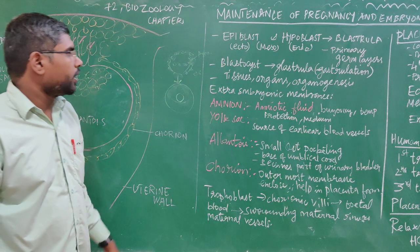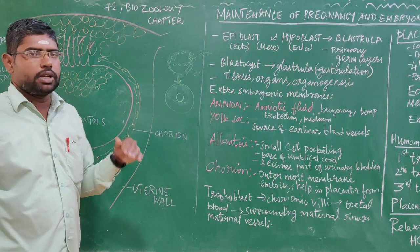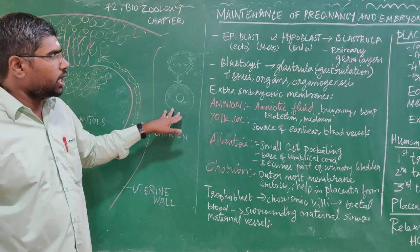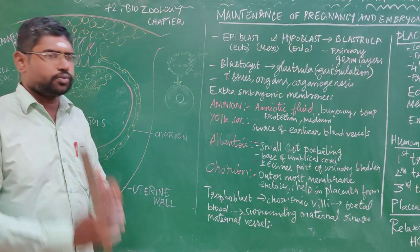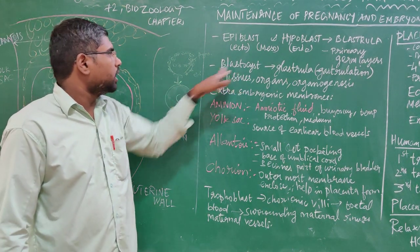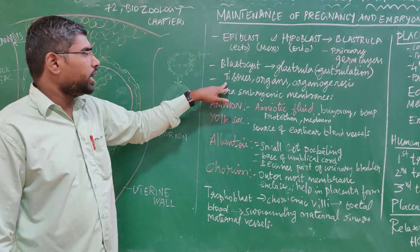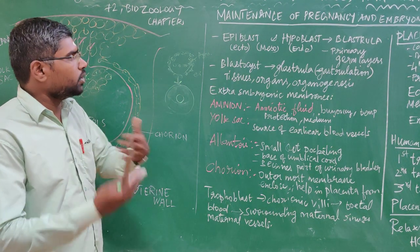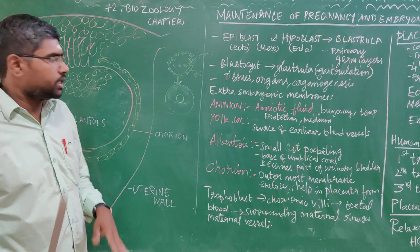So, after the 2 layers become 3 layers, this event is called gastrulation. In those 3 layers we have ectodermal tissues, mesodermal tissues, and endodermal tissues. These 3 layers — ectoderm, mesoderm, and endoderm — are present in the fetus and give rise to organs.